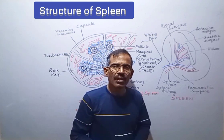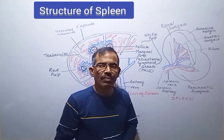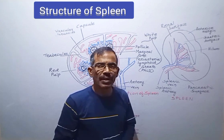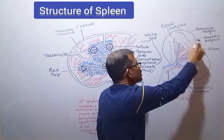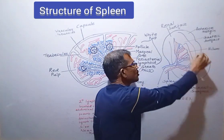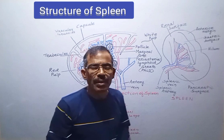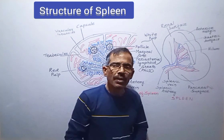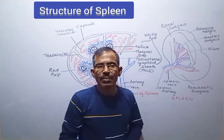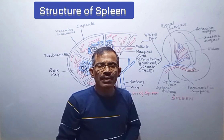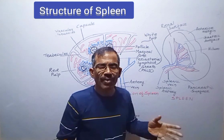Today we shall discuss about the structure and function of spleen. Spleen is a secondary lymphoid organ found in almost all vertebrates. It is located in the upper part of the abdominal cavity behind the stomach and close to the diaphragm.